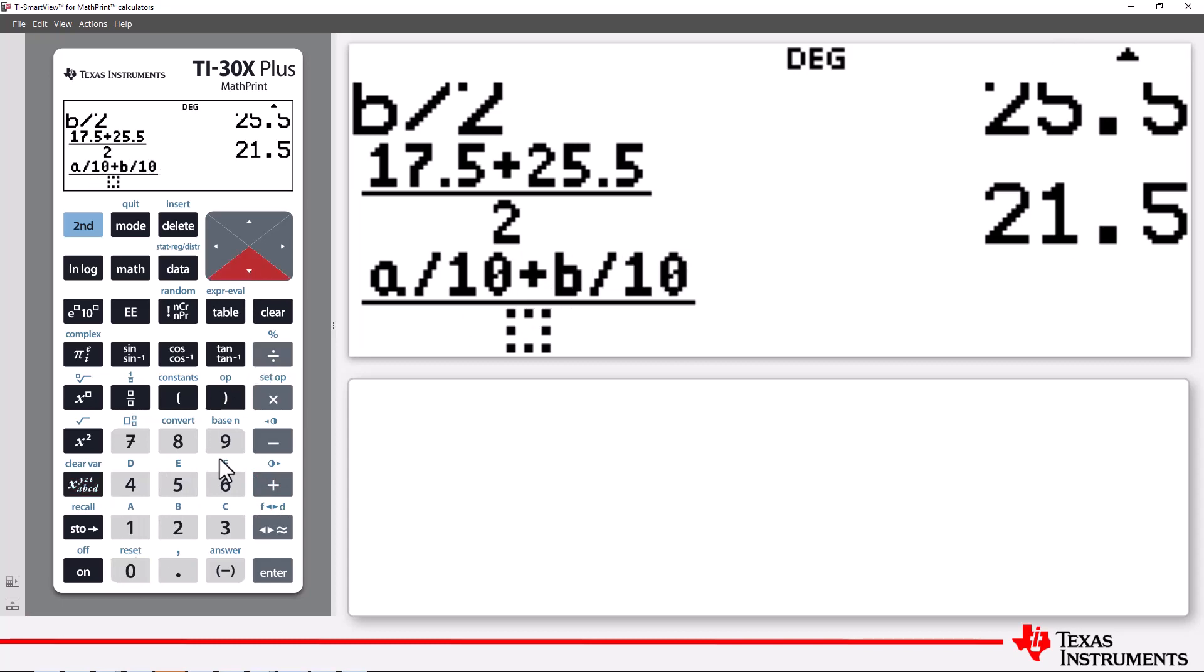This time we get an approximate area of 21.34. Using integral calculus, the area is actually 21.33, or 21 and a third, so our approximation with just 40 columns is pretty accurate.